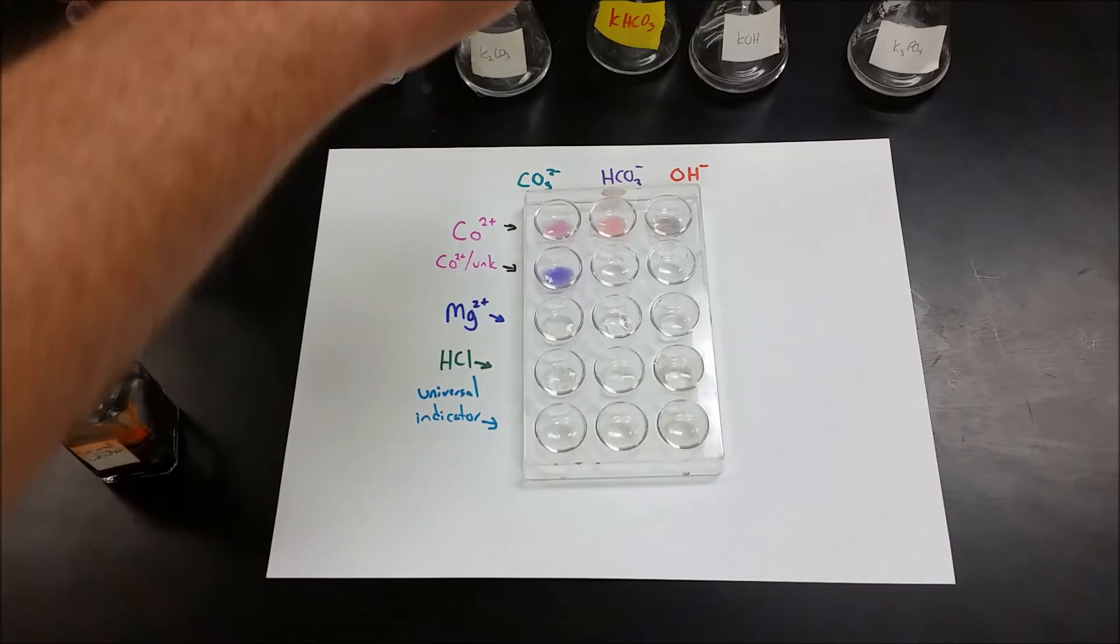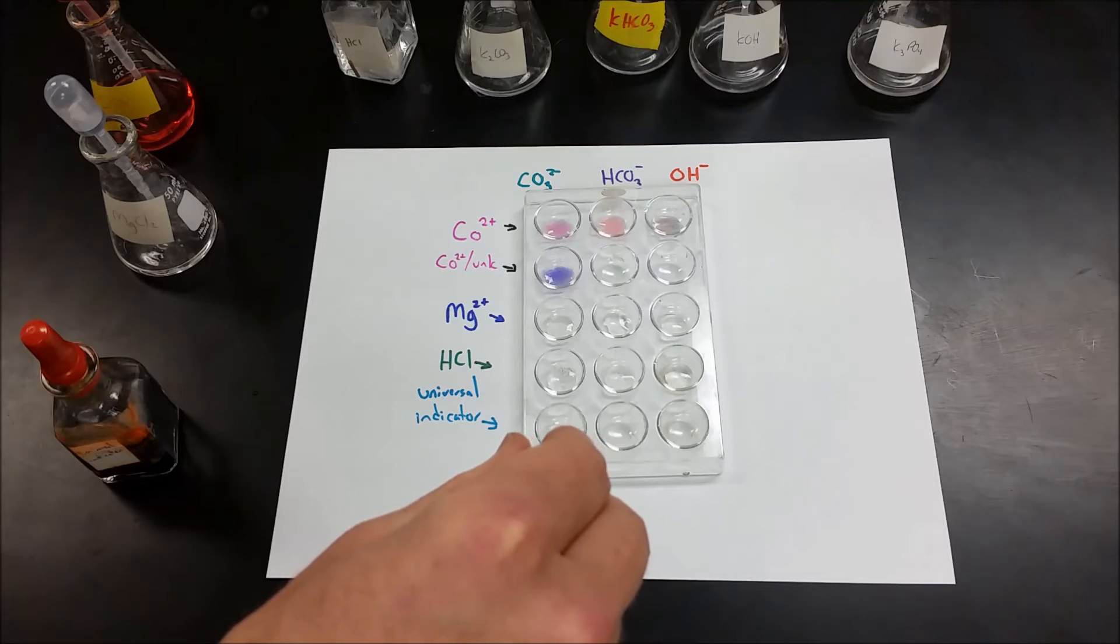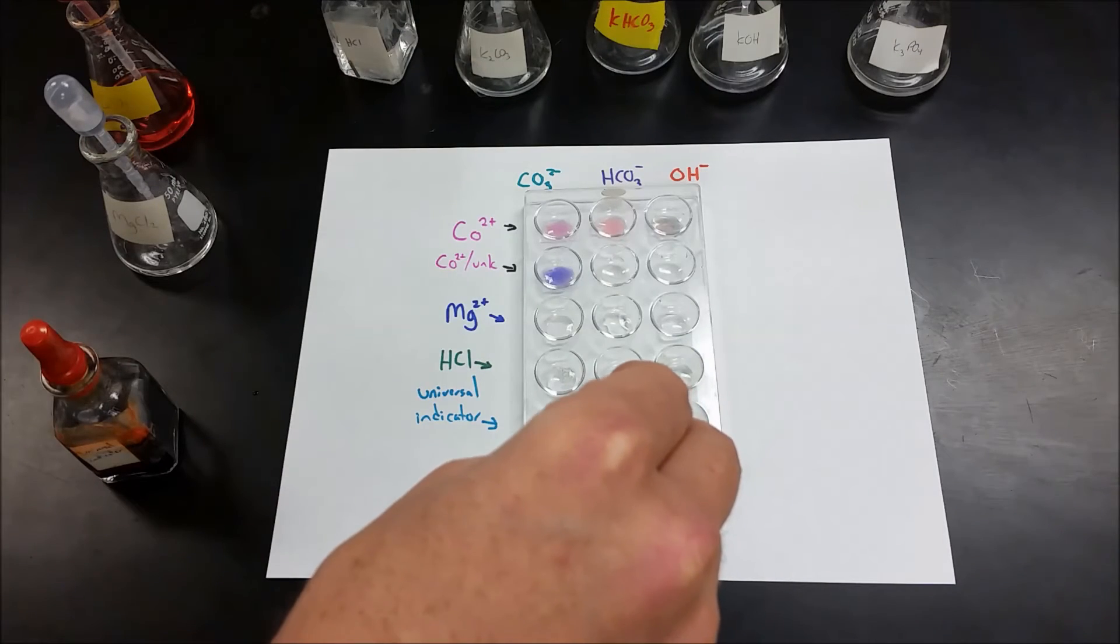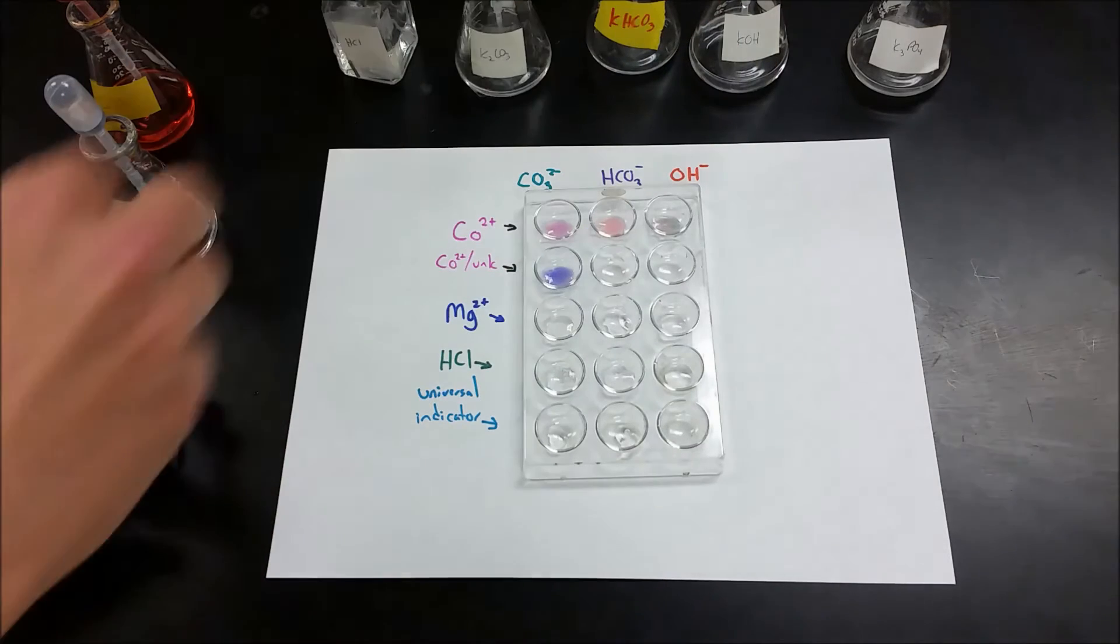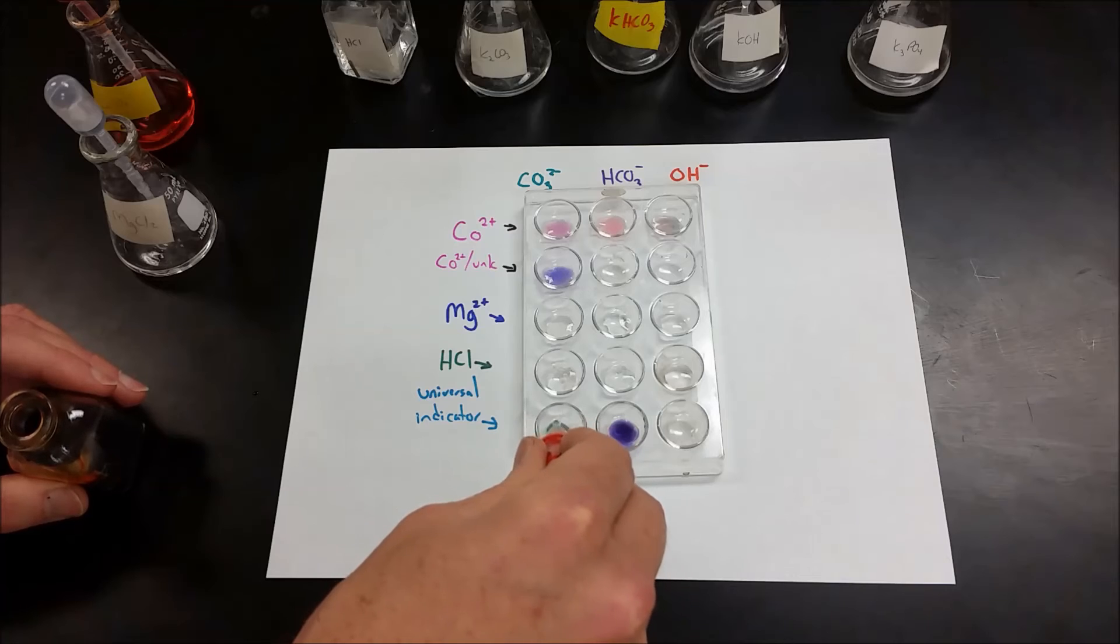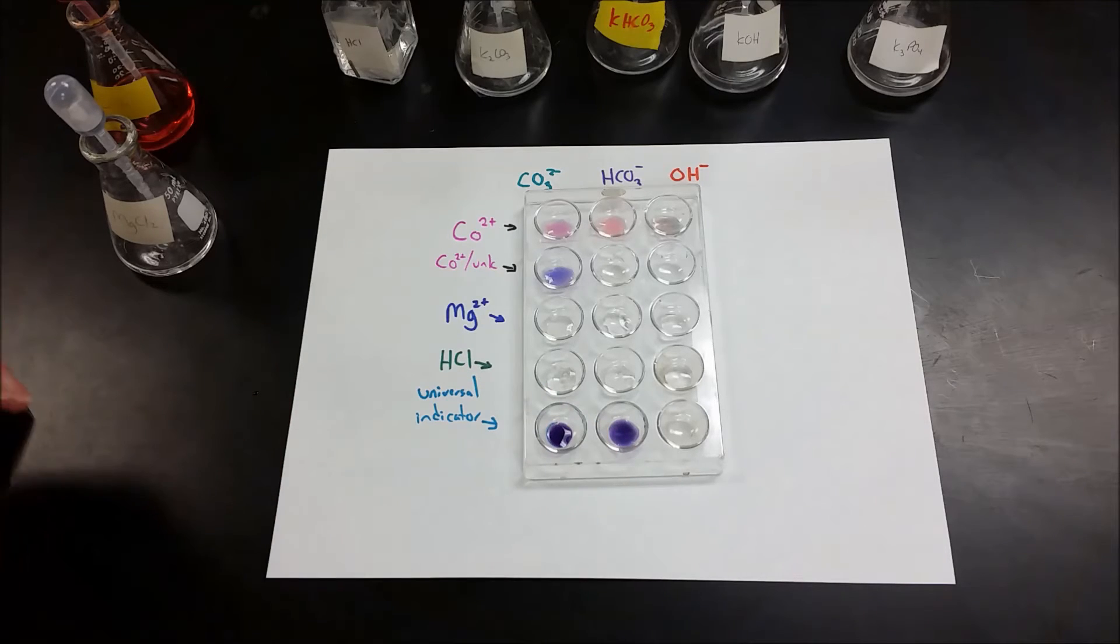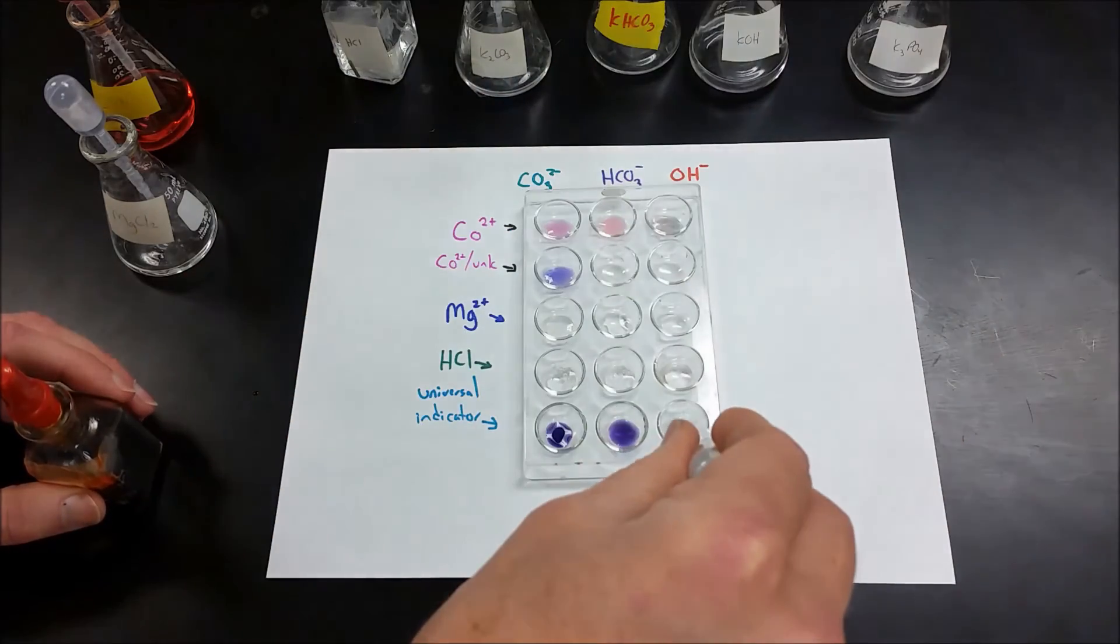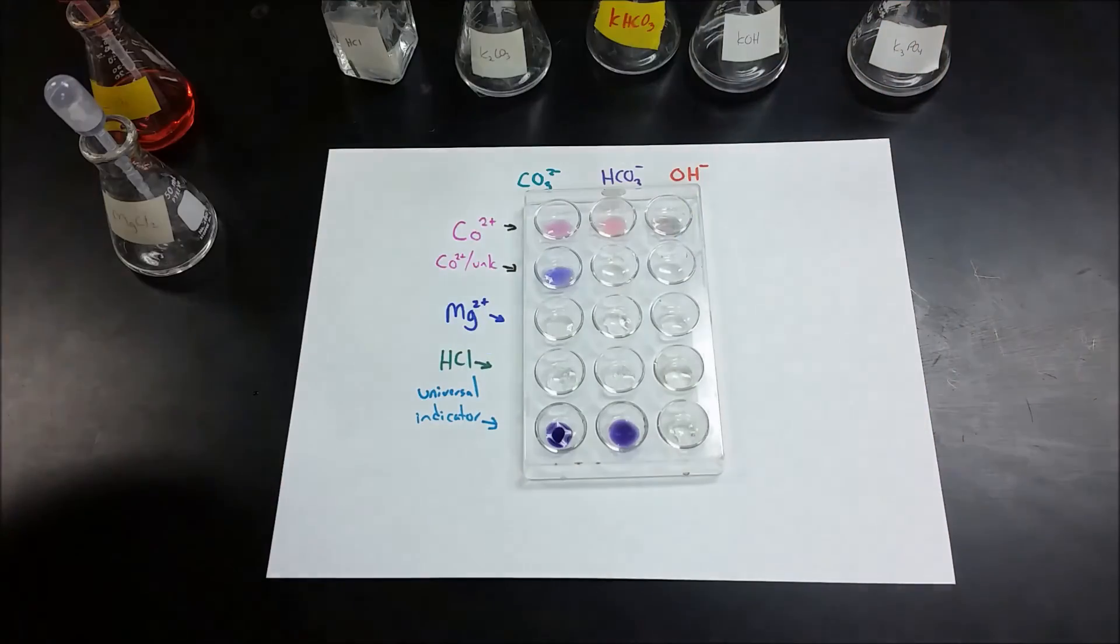And then the last one, we're going to do one more test to tell apart the carbonate and the bicarbonate, and that is adding universal indicator. Sometimes it's just right. The bicarbonate will turn blue and the other will turn purple. Here they look very similar and it'd be really too challenging for me to tell apart. If I did the hydroxide, it would also give me a violet color.